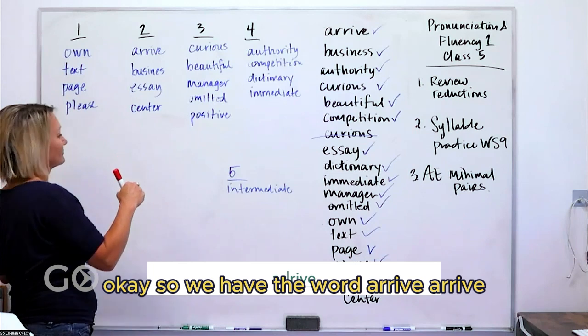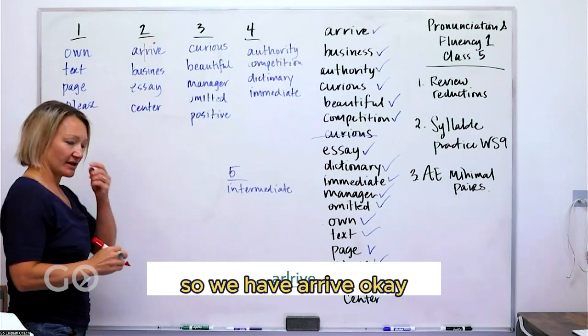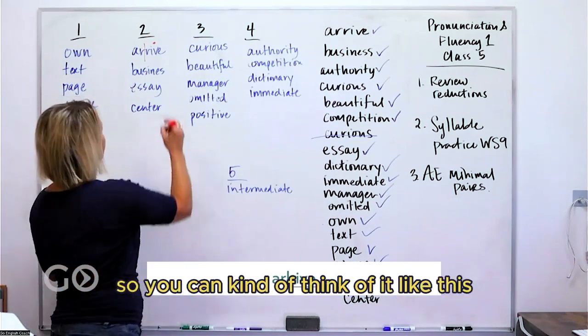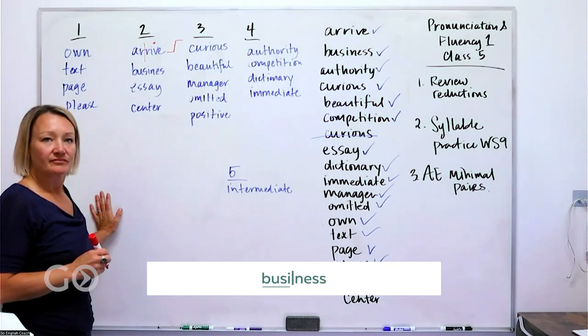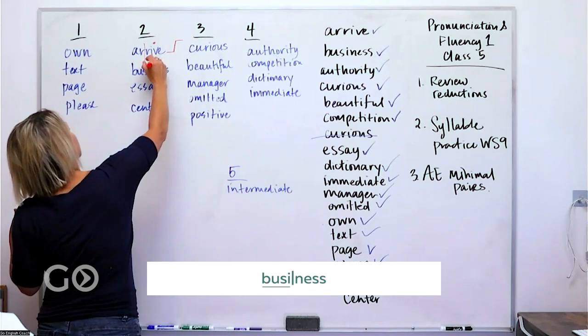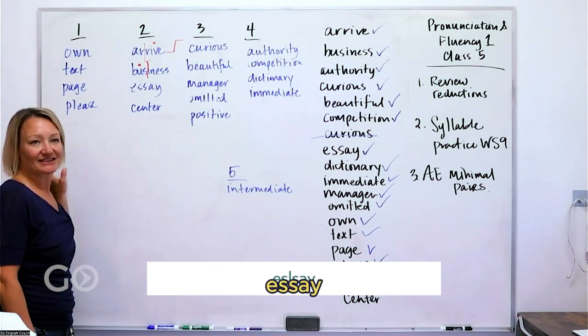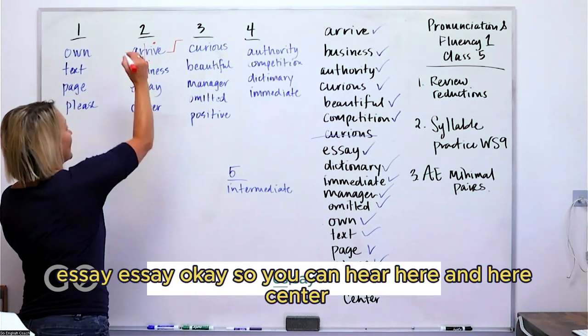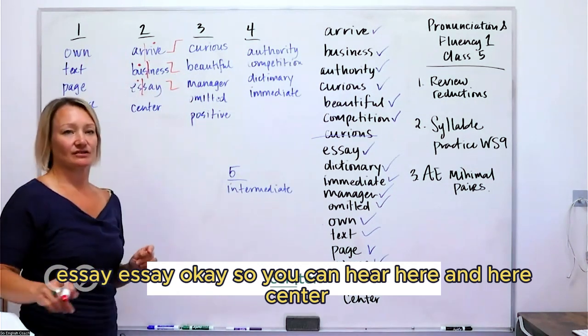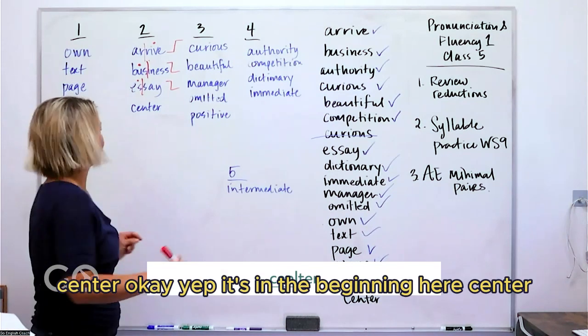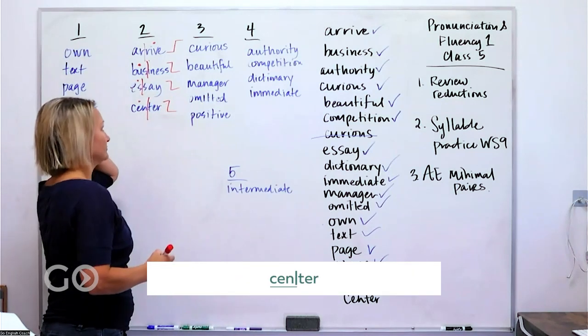But for these other words, let's start listening for the stress in the word. So we have the word arrive. Arrive. So it splits here and this is stressed. So we have arrive. So you can kind of think of it like this. It goes here and then it goes up. Business. Business. So we're going to go like this and we're going to stress here. Business. Essay. Essay. So you can hear here and here. Center. Center. Yep, it's in the beginning here. Center.